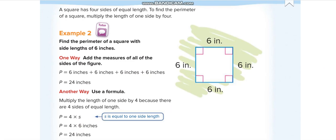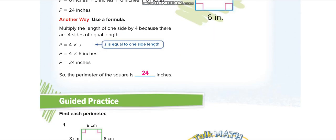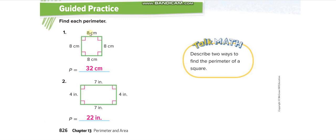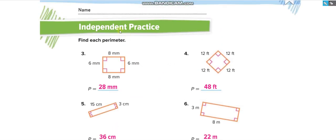Let's move to the guided practice. For a square, all four sides are the same — add all of them or multiply four times 8, both give you 32. For the rectangle, the sides are different — four and twenty-two. Let's move to the next page for independent practice.